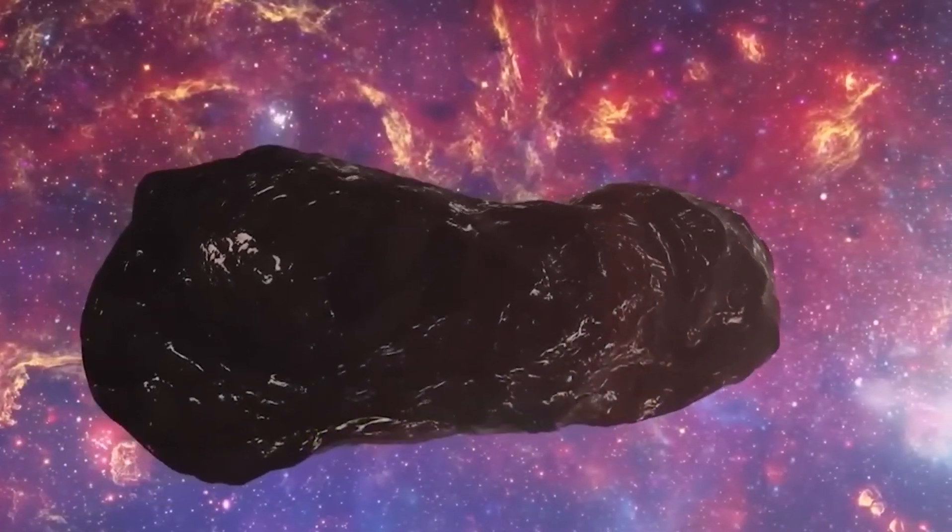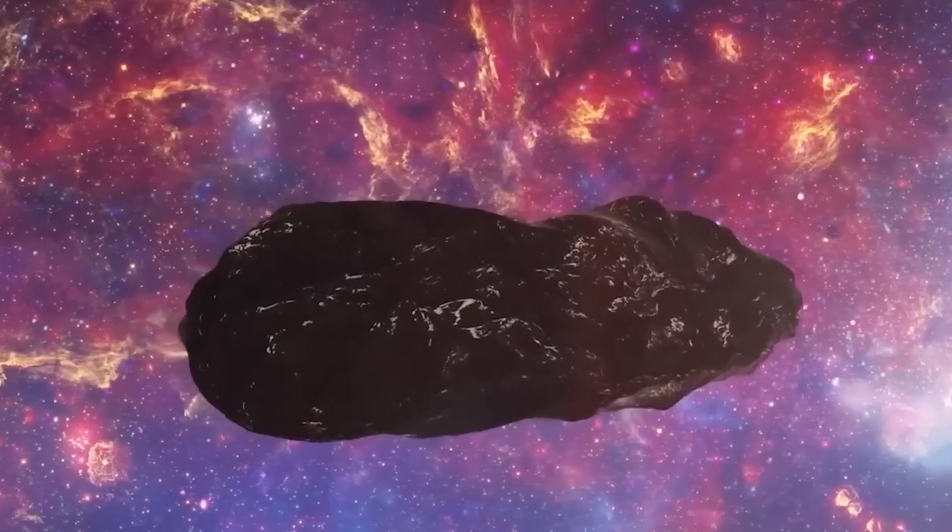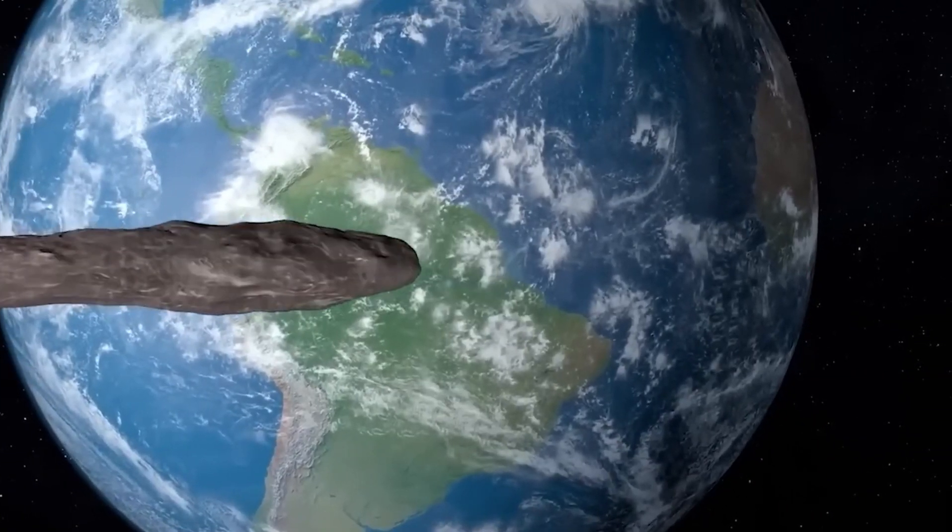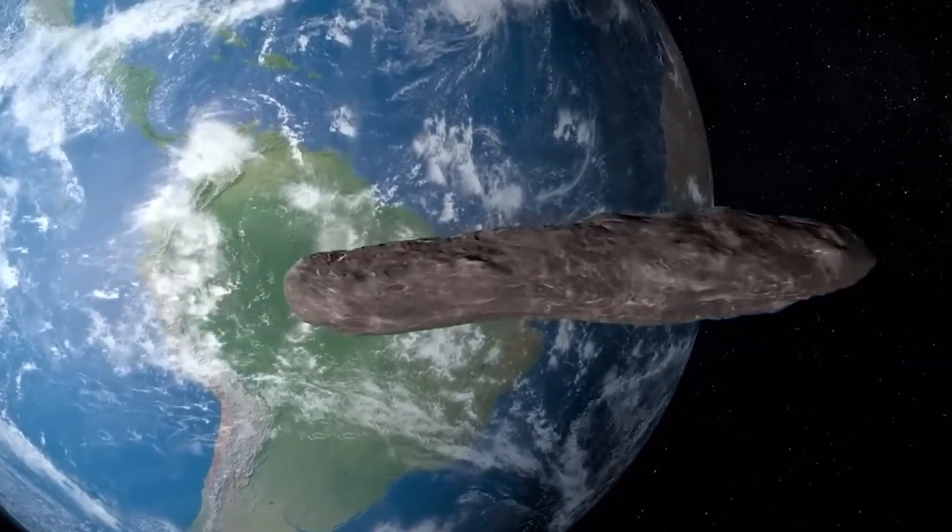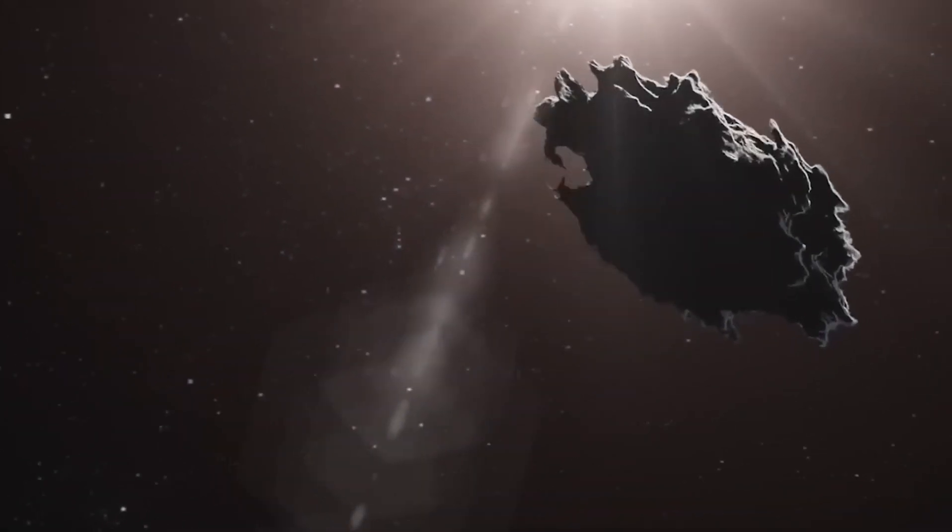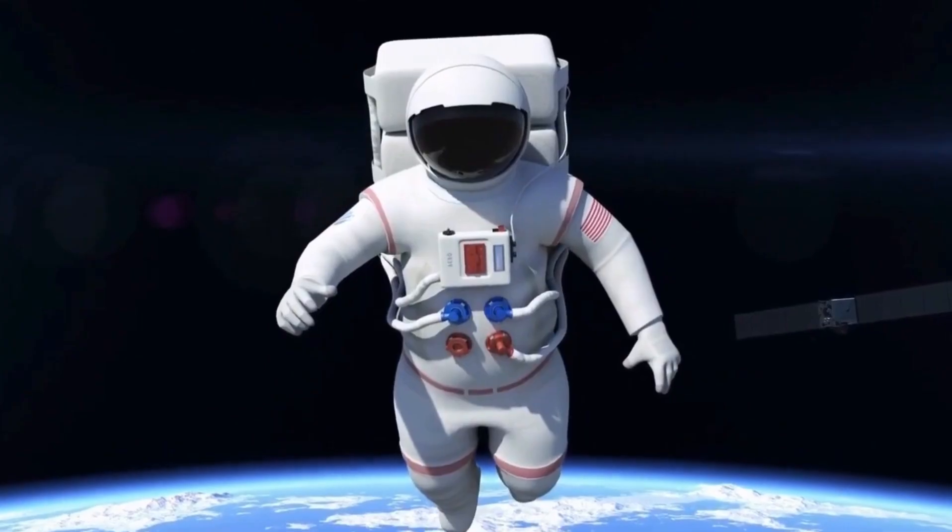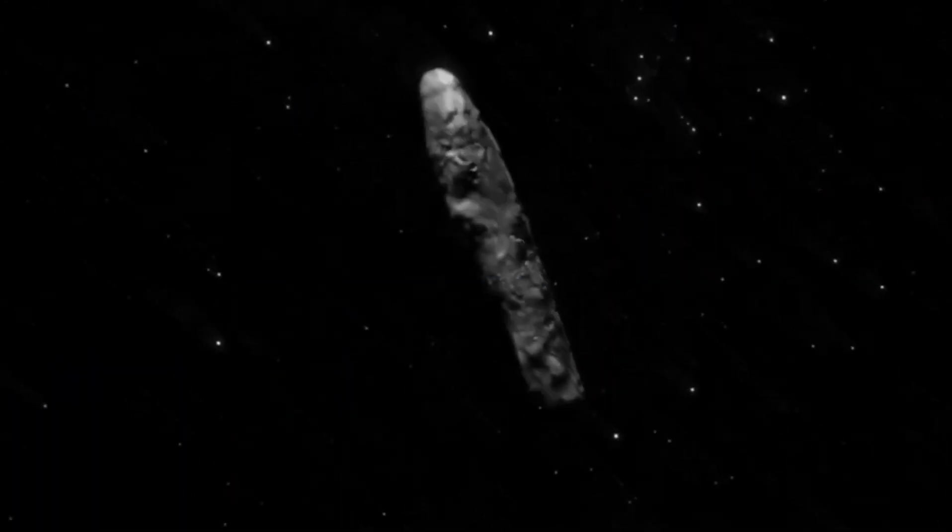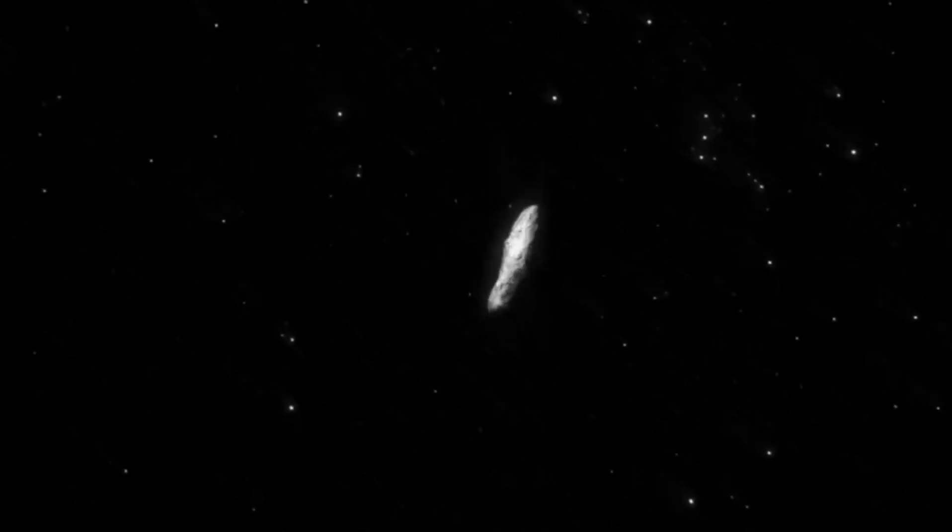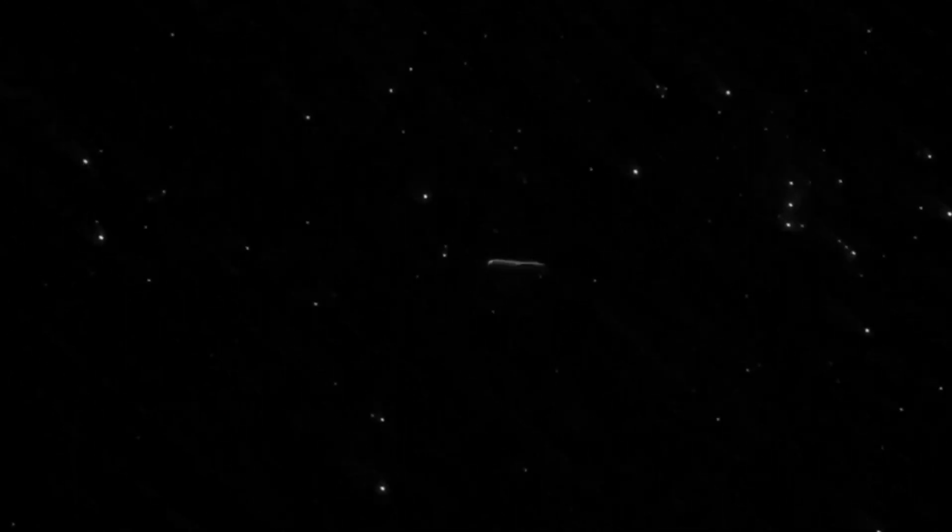Through meticulous observations and data analysis, scientists were able to confirm that Oumuamua was a natural object likely composed of rock and metal. Its lack of a visible tail or gas emissions ruled out the possibility of it being a typical comet. Instead, it was classified as an interstellar asteroid, making it a rare and remarkable discovery in the realm of space exploration.